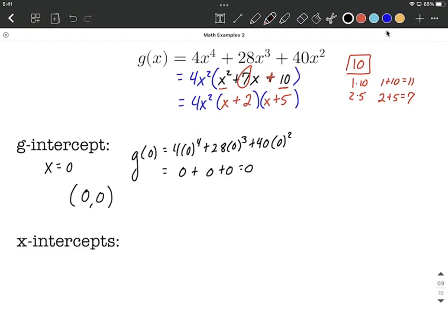to locate our x-intercepts, x-intercepts are going to occur whenever the whole function, g of x, equals 0. So we could plug in a 0 on the left-hand side where the g of x would be. But to accomplish this, because we did our factoring first, we can look at it one factor at a time and say, what would I plug in for this x in order to make this factor equal 0?